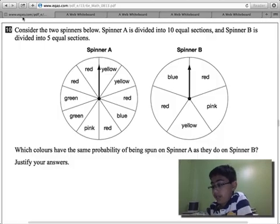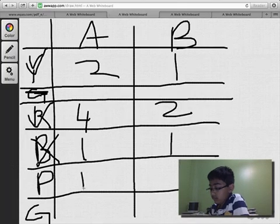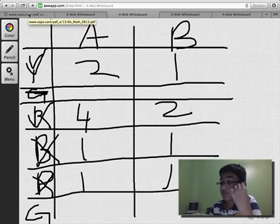What about pink? One to one again. One to one. So this will not be going in the list of same probability for spinner A and spinner B.